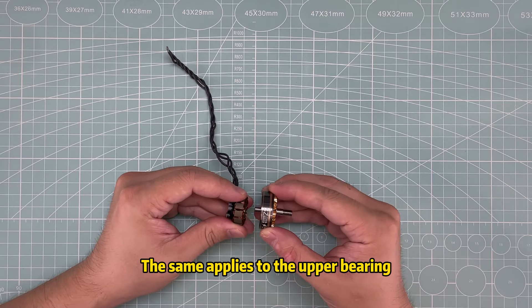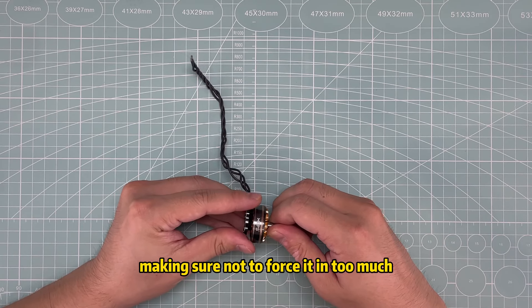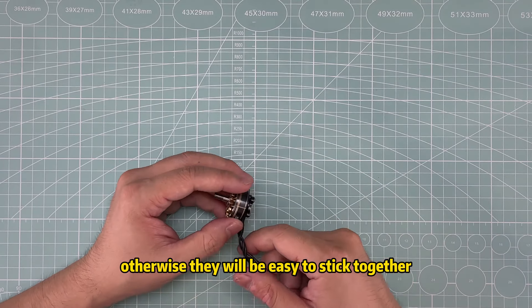The same applies to the upper bearing. Gently place the rotor inside. Make sure not to force it in too much. Otherwise they will be easy to stick together.